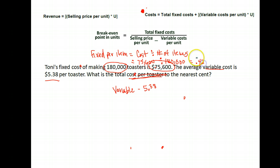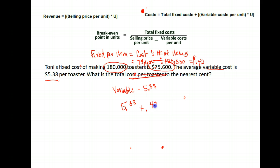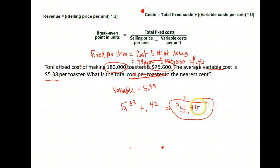Now we can find what they're looking for — the total cost per toaster. We add the variable cost per toaster of five dollars and thirty-eight cents plus the fixed cost per toaster of forty-two cents. Adding those together, the total cost per toaster is five dollars and eighty cents.